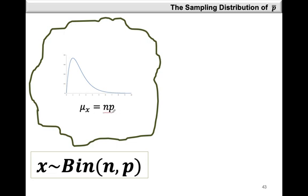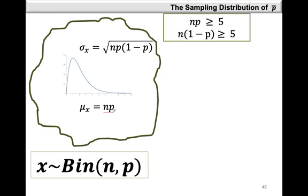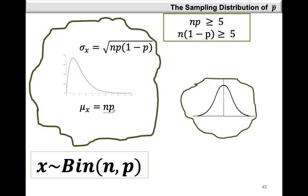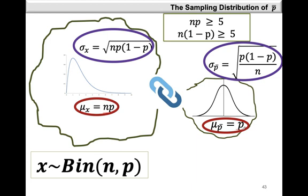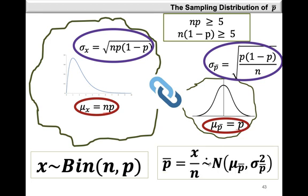The standard deviation sigma X is the square root of N times P times 1 minus P. If our samples are large enough, then the following criteria need to be met: N times P should be at least 5, and N times 1 minus P should also be at least 5. Then the sampling distribution of P-bar is approximately normally distributed, with the mean equal to the population proportion P and the standard deviation equal to the square root of P times 1 minus P over N. So P-bar is approximately normally distributed with mean mu P-bar and variance sigma squared P-bar.